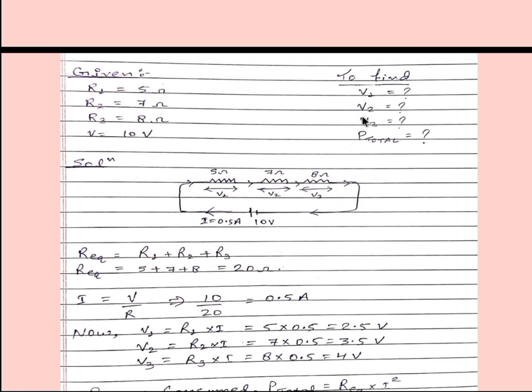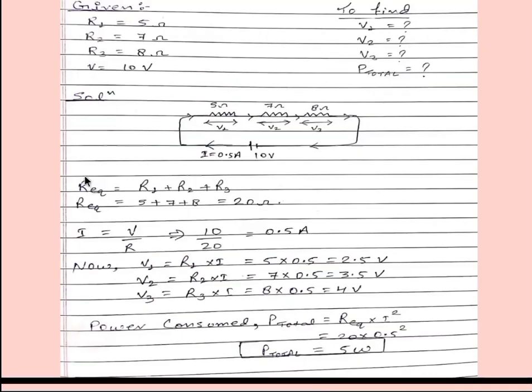So what is given in the question is R1, R2, R3, and V. And what we have to find is V1, V2, V3, and P total. First of all we will calculate R equivalent. R equivalent is equal to R1 plus R2 plus R3. So R equivalent is equal to 5 plus 7 plus 8 is equal to 20 ohm.